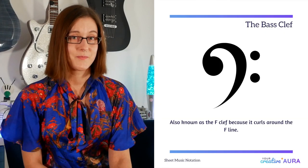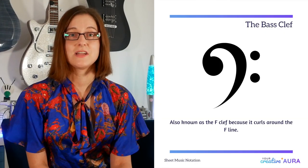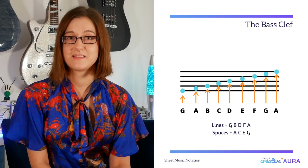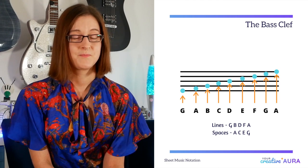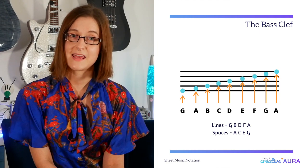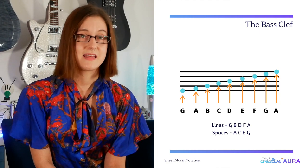Now our second main clef to learn is the bass clef. It is known as the F clef because it curls around the F line. Now bass, meaning low pitched, refers to instruments of a lower pitch such as the bass guitar, cello, and the bassoon. And it looks like this. Now each line and space represents a letter from the musical alphabet. Our bottom line starts at G and the space above is an A.